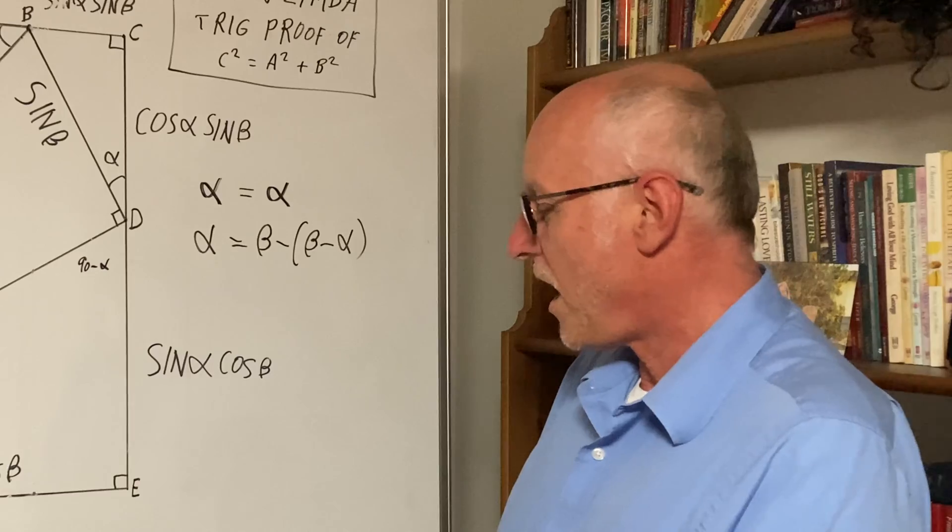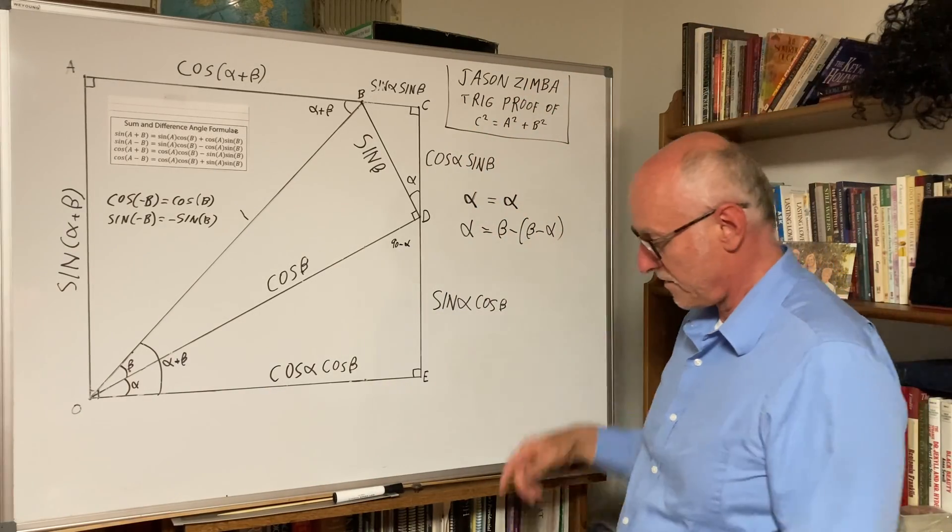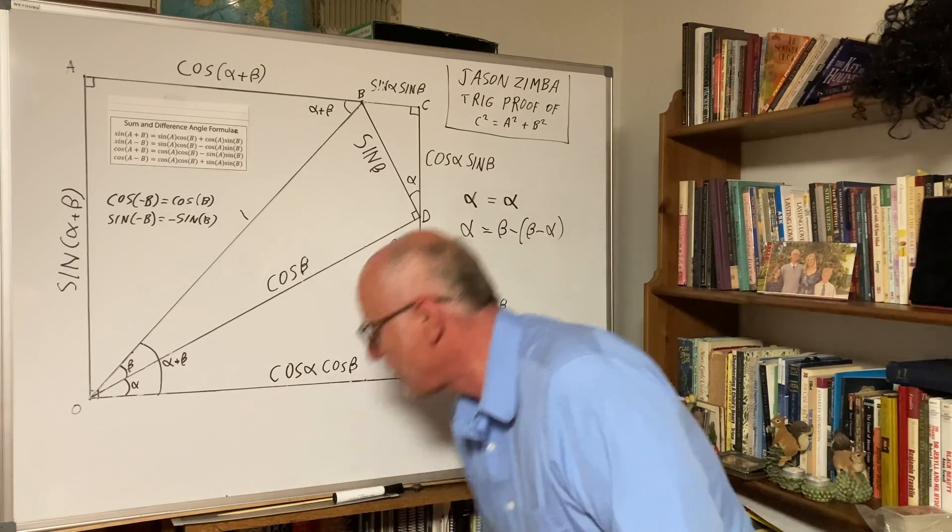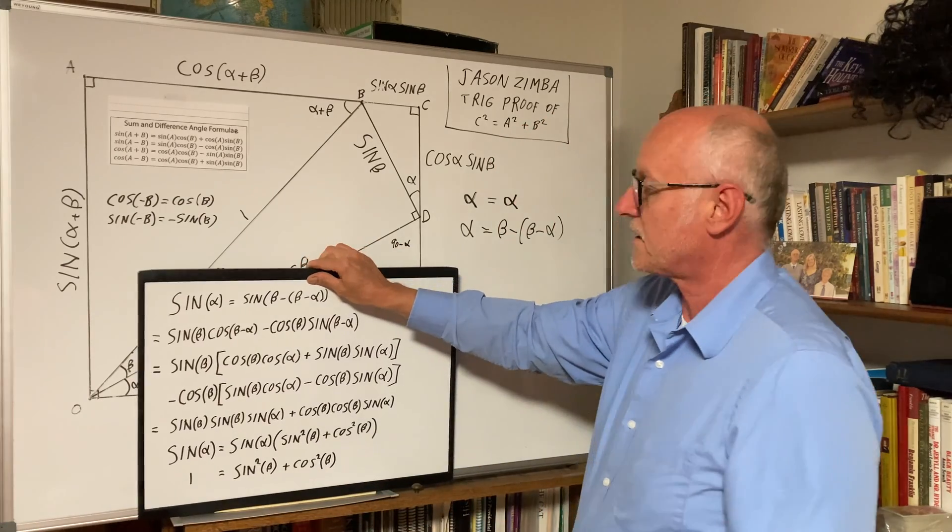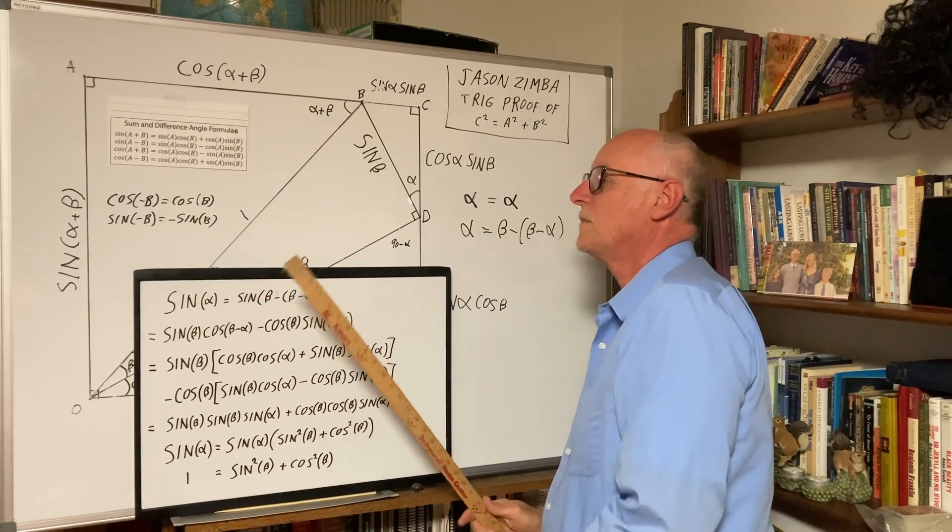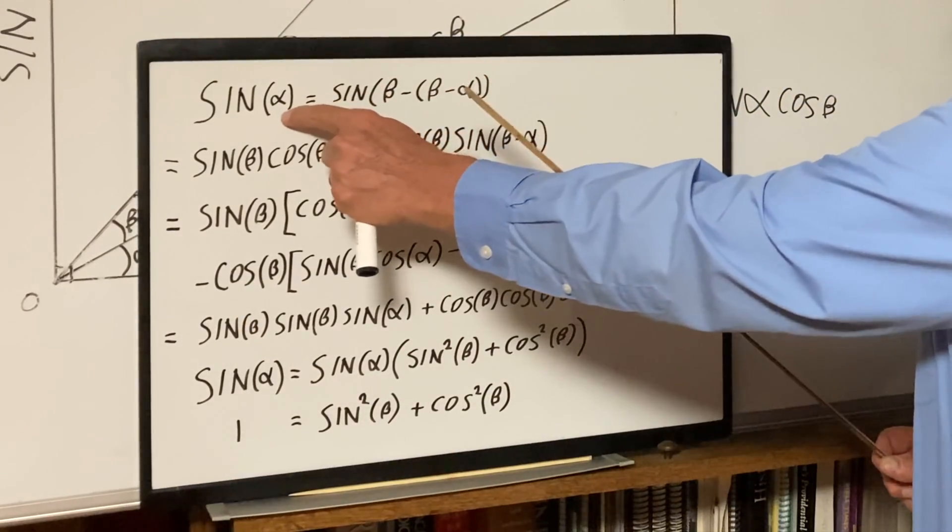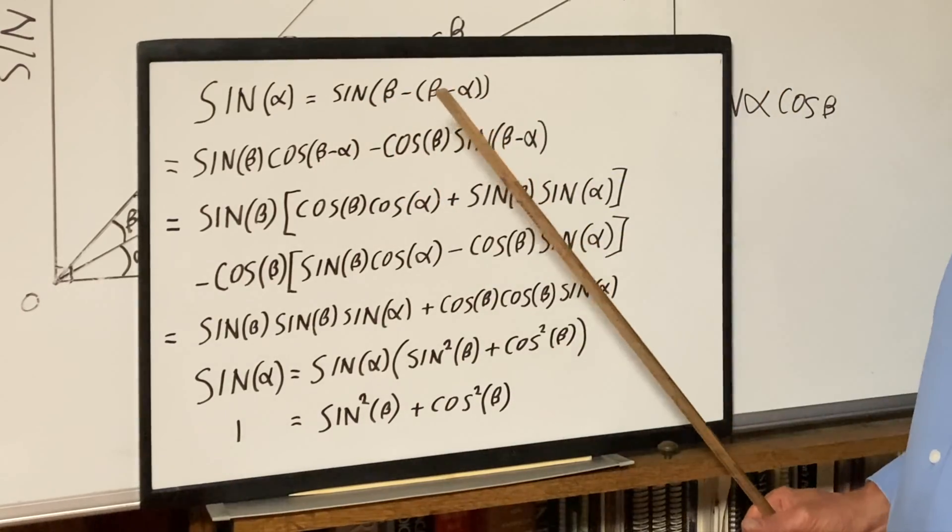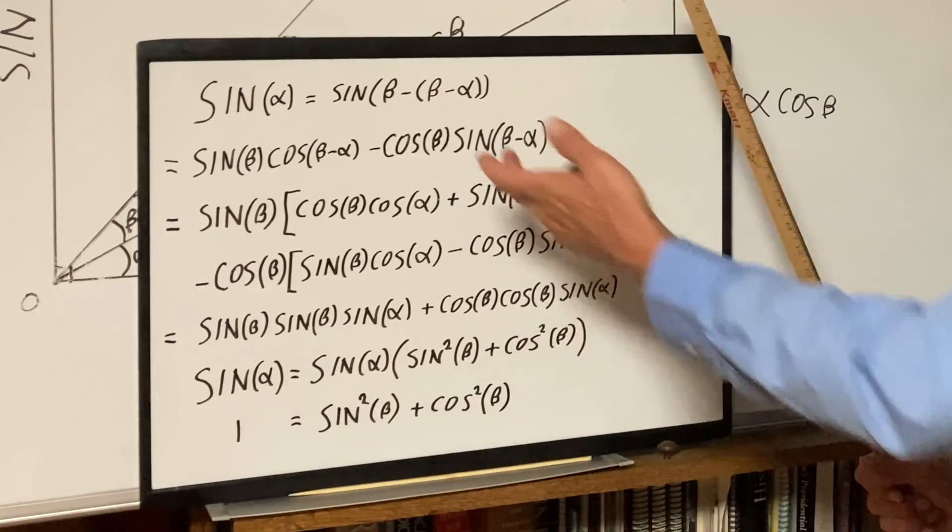Now, why would we bother with such an obvious truth? Well, that's exactly what Jason Zimba is using in his famous proof. He takes the sine of alpha. That's the same as the sine of beta minus beta minus alpha. That's a true statement.